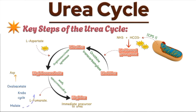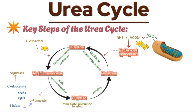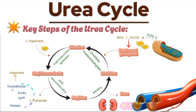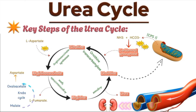Arginine is the immediate precursor to urea, while fumarate can enter the citric acid cycle to be converted into malate and then oxaloacetate, which can be recycled to aspartate. Finally, arginine is hydrolyzed by the enzyme arginase to produce urea and ornithine. Urea is released into the bloodstream and transported to the kidneys where it is excreted in urine, while ornithine is transported back into the mitochondria to continue the cycle.